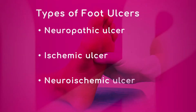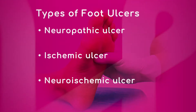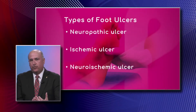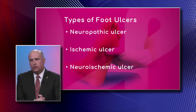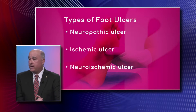The neuropathic ulcer is a type of ulcer where the patient has — for all intents and purposes — a hole in the skin, surrounded by a heavy, very thick callus formation. The typical neuropathic ulcer has a reasonable amount of blood supply, so the base of the ulcer looks beefy red.